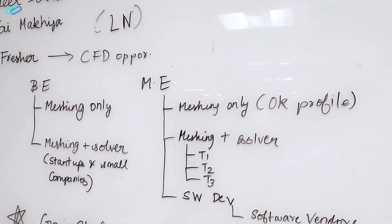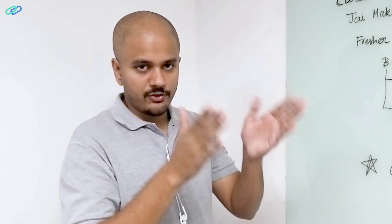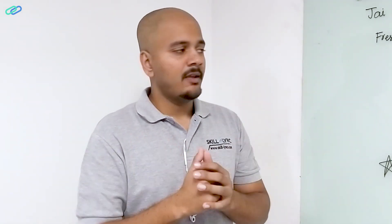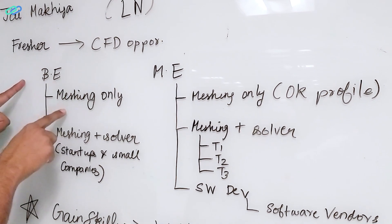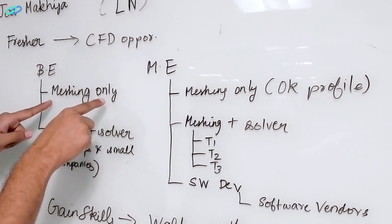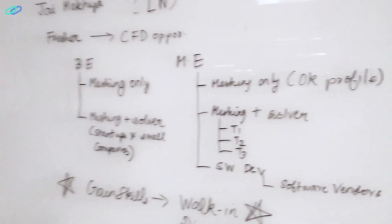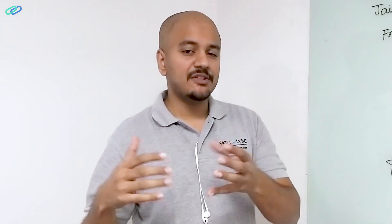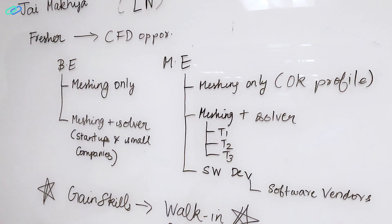As you might know, if you're a student who already knows a bit of CFD, meshing is the first stage. For this you would use tools like Pointwise. So if you're looking for a meshing-based job, that's easy to get. But typically, if you have a low GPA — meaning less than 7.0 or less than 70% — this is the type of opportunity you will mainly get.